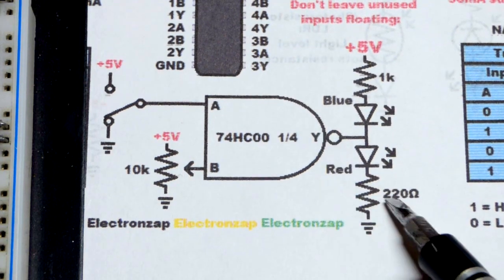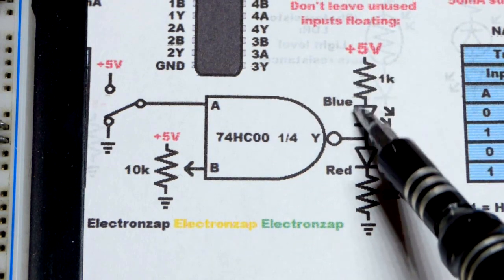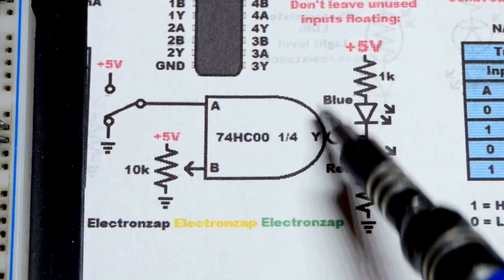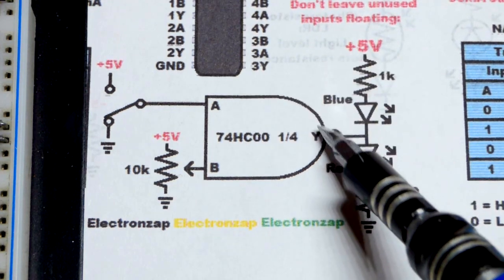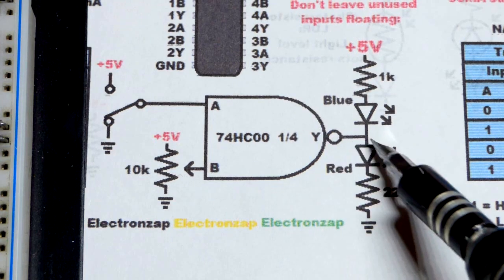When the output is low, right there, so basically it's connected to ground as good as it can, you can see that the blue LED will light up. When the output is high, it's connected as close to five volts as it can get. Then we will have a current path through there.